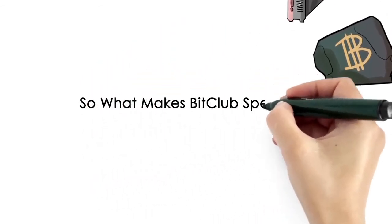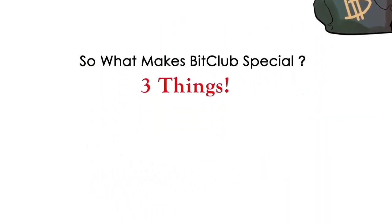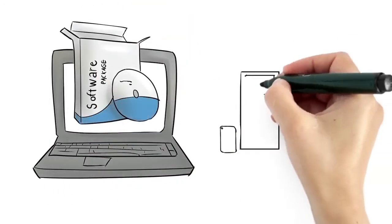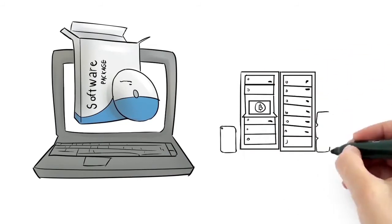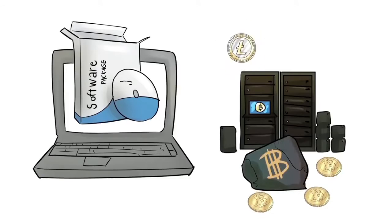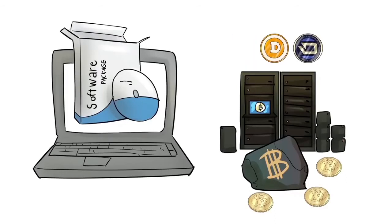So what makes BitClub special? Three things. First, we have created our own proprietary software that controls mining hardware and uses it to mine for the most profitable coin in that moment. So it's not just Bitcoin, but dozens of digital currencies that are mined and converted back into Bitcoin instantly. This allows us to be a lot more profitable than most mining pools while also diversifying into other digital currencies like Litecoin, Dogecoin and Blackcoin to name a few.